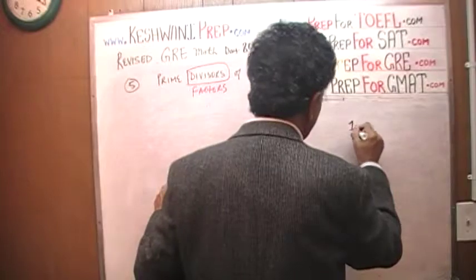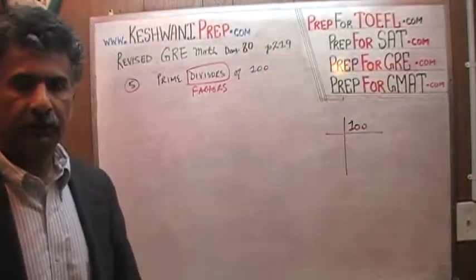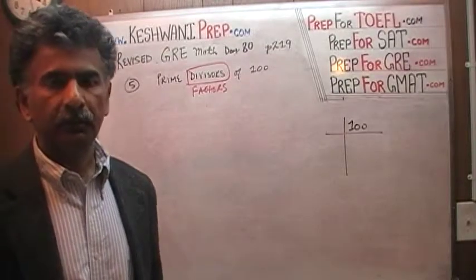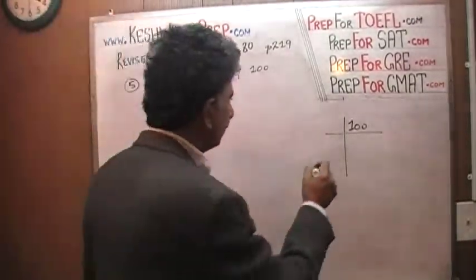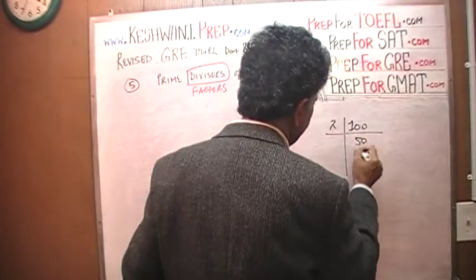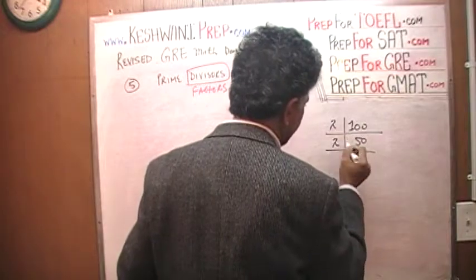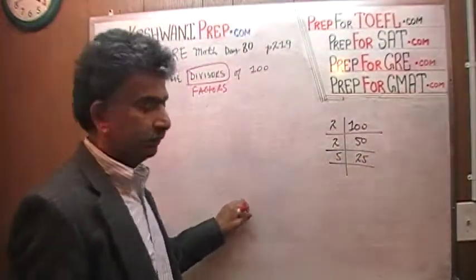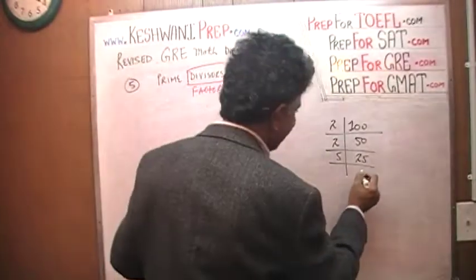Write down 100 and start dividing it by the lowest possible number you can find — not including 1, obviously; there is no point in it. Let's start with 2. 100 divided by 2 is 50 — that's an even number, so we can go one more round. 50 divided by 2 is 25. Then we can't divide 25 by 3 or 4, so the lowest number we can use is 5.